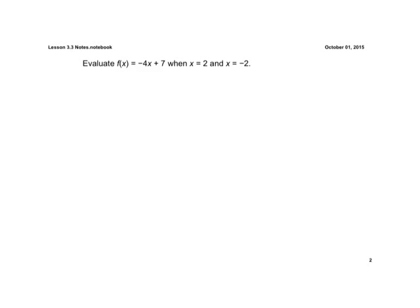Our first example here, evaluate f of x equals negative 4x plus 7 when x is both 2 and x is negative 2. So we're going to have two answers here.